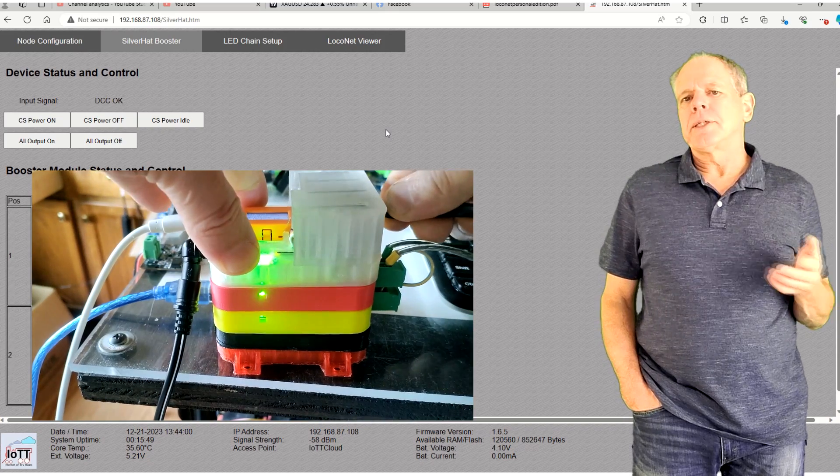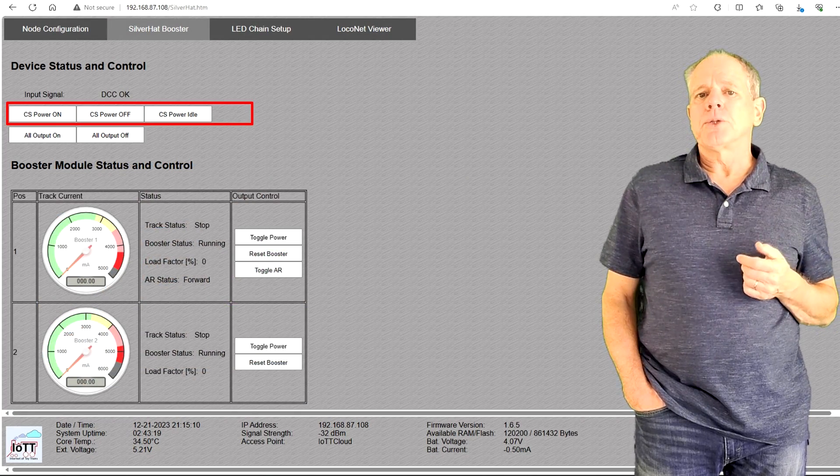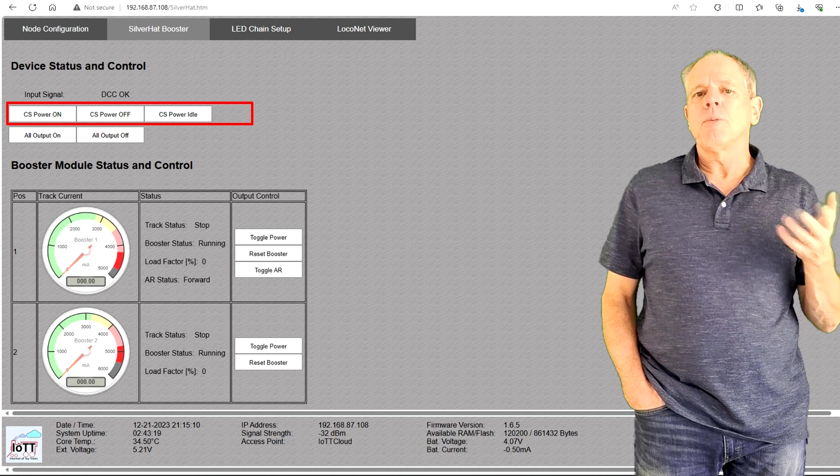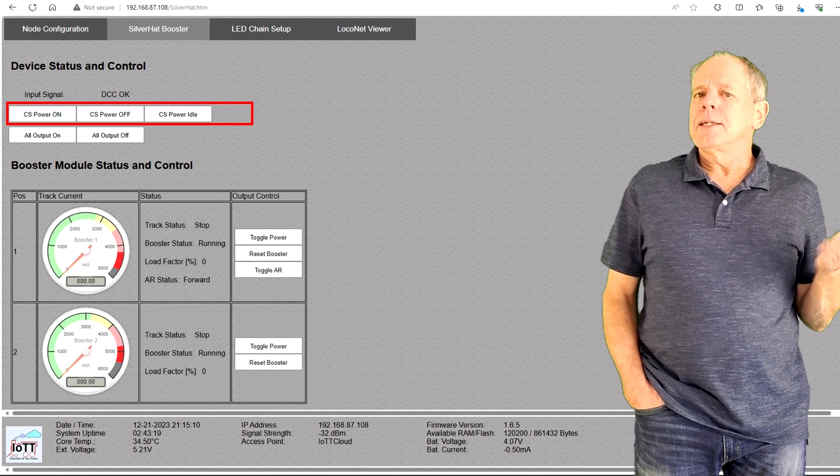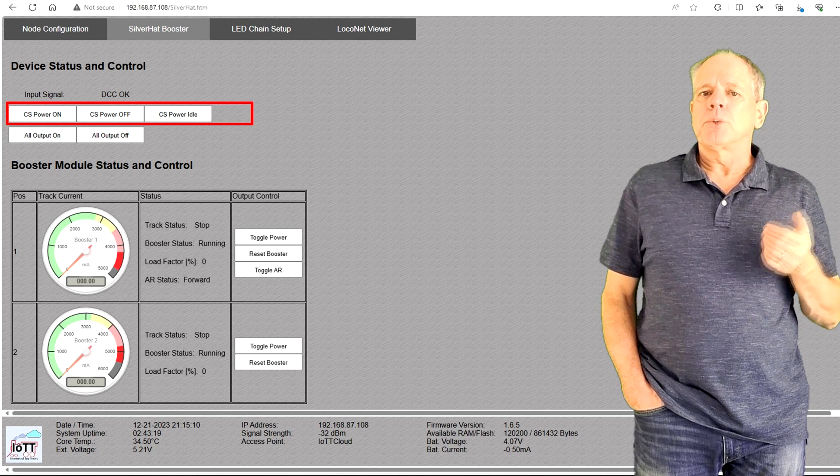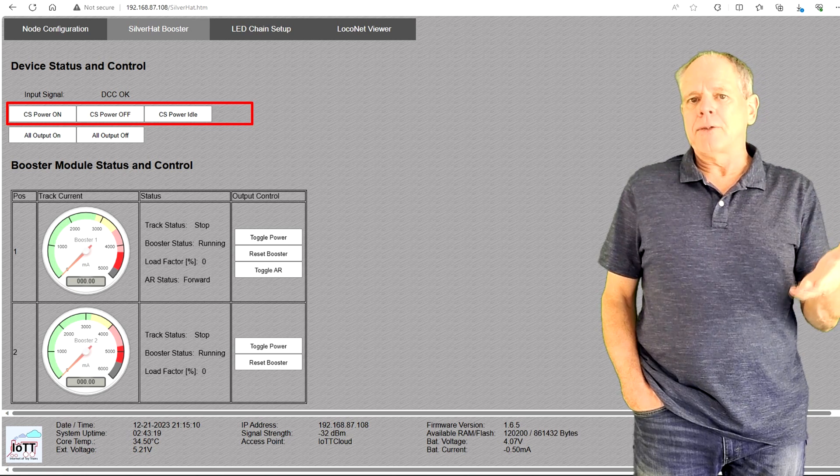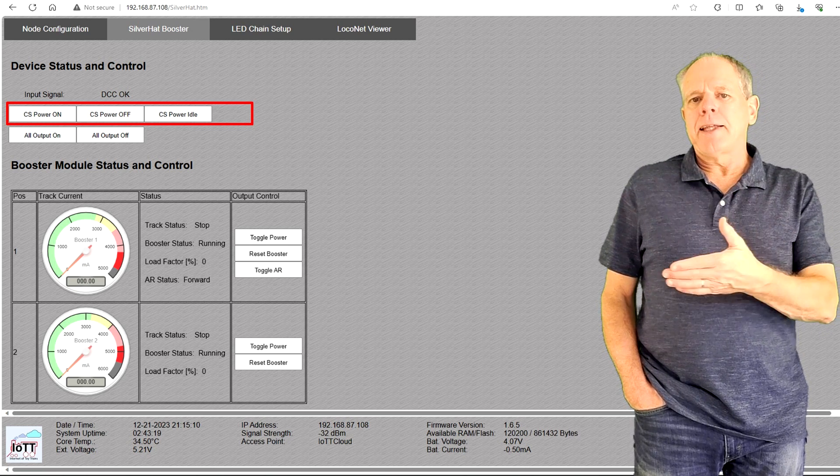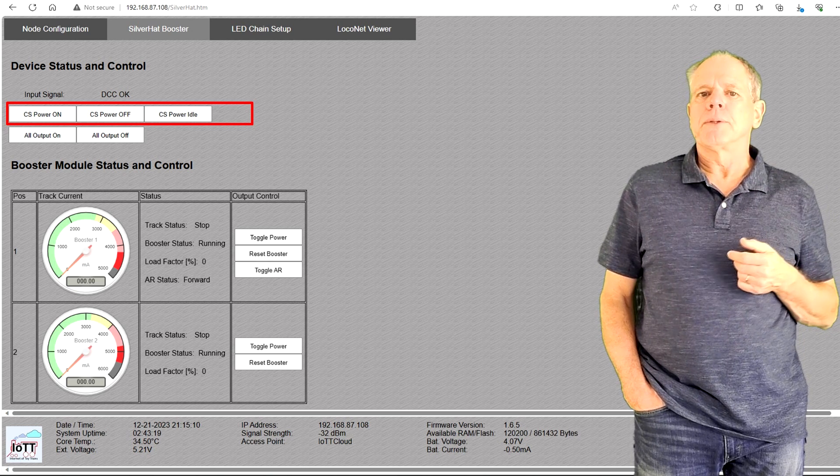If the booster is connected to LocoNet, you get a set of buttons to set the power status of the command station to on, off or idle. Note that this only indirectly affects the booster output. If you click on Stop, the command station shuts down the DCC signal and that in turn makes the booster to shut down too because there is no input.